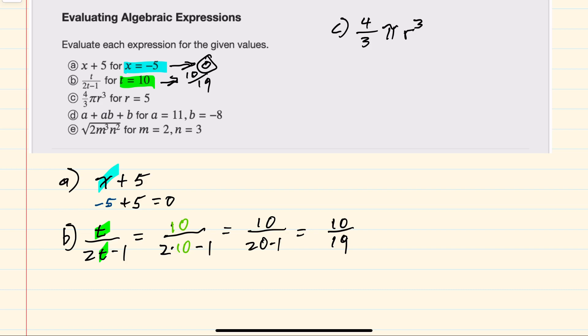For c, we have 4/3 pi r cubed where r equals 5. So replacing r with 5 gives us 4/3 pi 5 cubed. Evaluating exponents first would give us 5 cubed is 125. Simplifying further, I can multiply in the numerator the 125 times 4 to be 500 pi over 3.